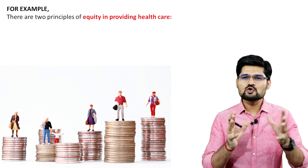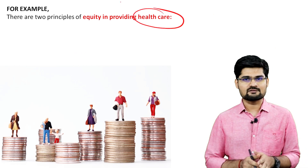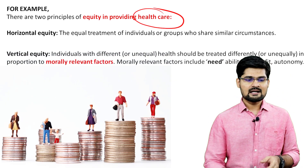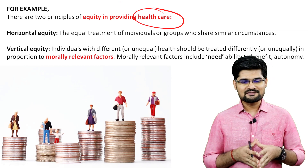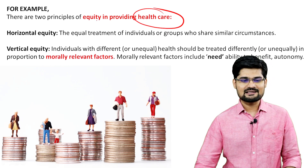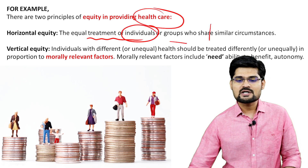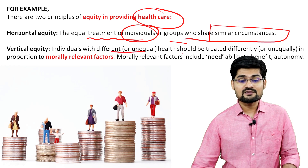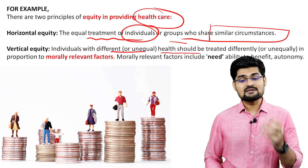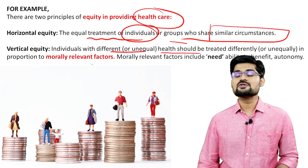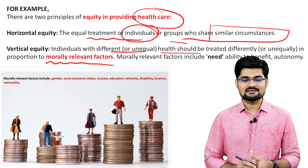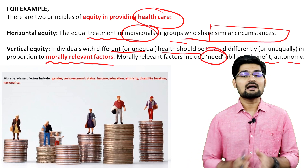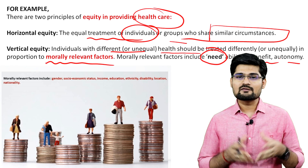As an example, the two principles of equity in providing healthcare — horizontal equity and vertical equity. Horizontal equity in healthcare is equal treatment of individuals or groups who share similar circumstances. Vertical equity means individuals with different health conditions should be treated differently, in proportion to morally relevant factors. Morally relevant factors include need, ability to benefit, and autonomy.